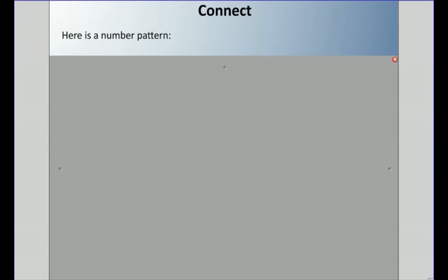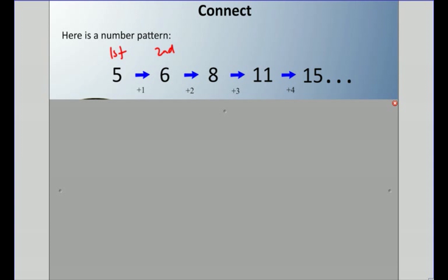All right, here's a number pattern. Five, six, eight, eleven, fifteen. And I put those dots, which are called ellipses, which means they go on forever. You might notice that it goes up one in the first term. From the first term to the second term, from the second term to the third term. And when I say by term, I'm talking about this is the first term of the pattern, the second term of the pattern, third, fourth, fifth, etc.